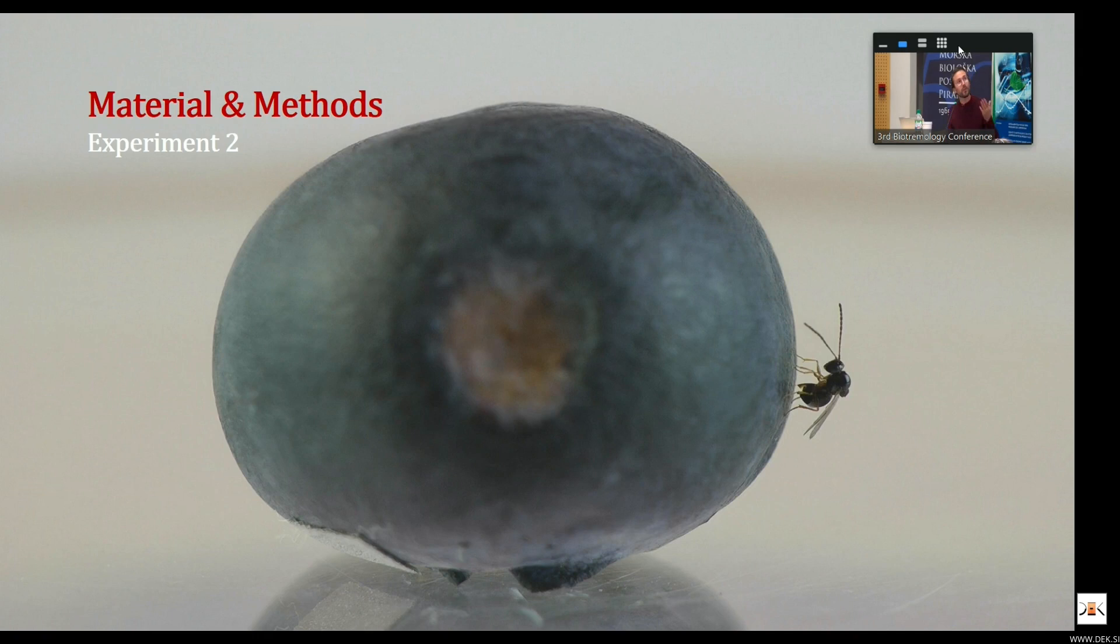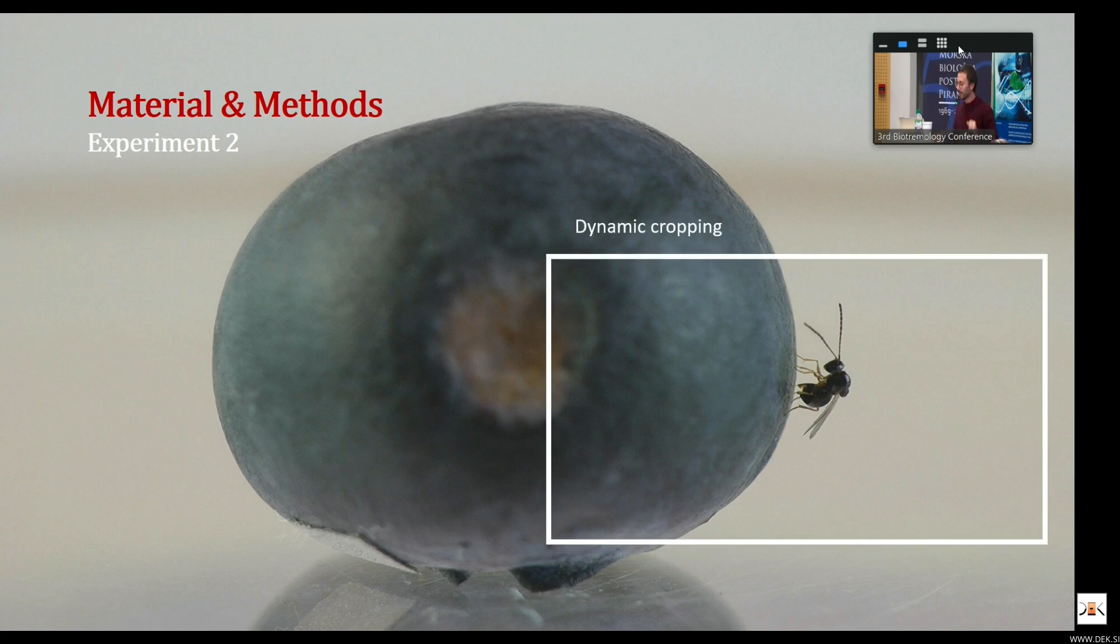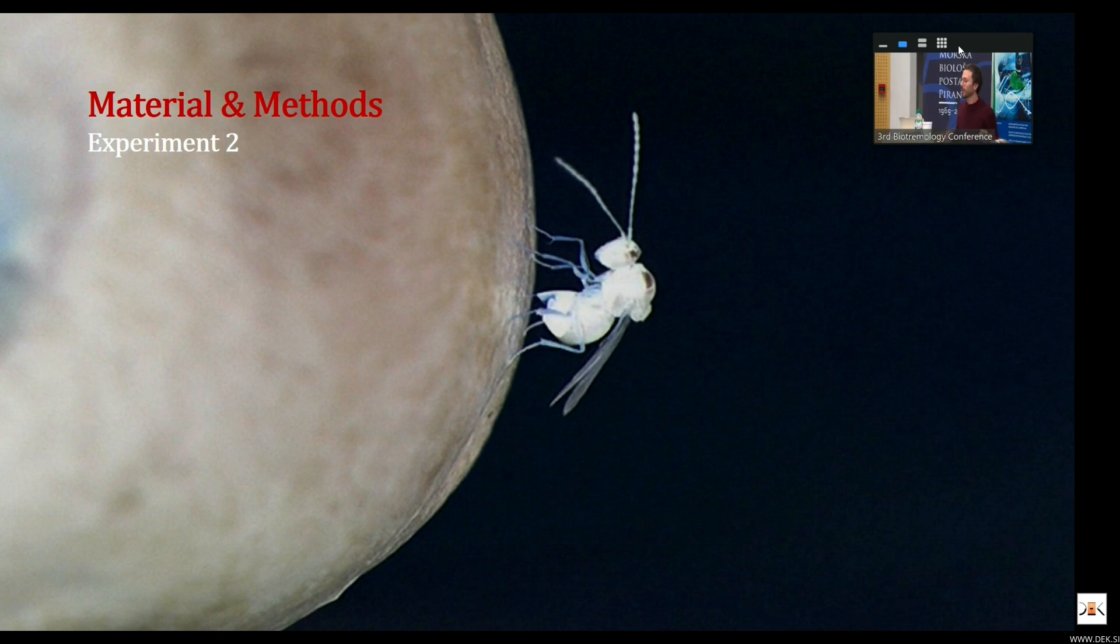Let me show you what I was actually looking for. This is Ganaspis brasiliensis ovipositing. You can see here we did a dynamic cropping, always following the insect. And then we did also a contrast increase and a color inversion. So what we were able to see at the end was much easier to identify, especially the ovipositor behavior.